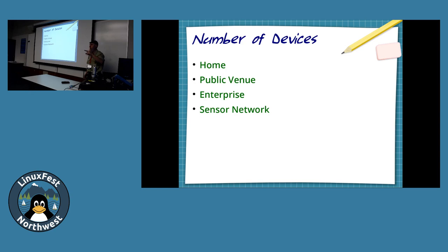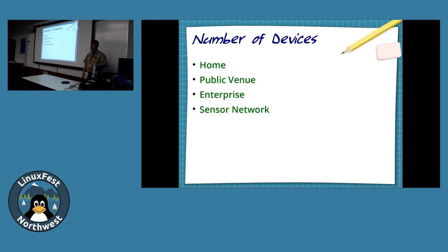Enterprises typically have multiple access points and you roam between them — at least that's the goal. Public venues can be different. You might get roaming, but you're also probably invoking things like a captive portal authentication system, like at an airport or a stadium. Enterprise setups are typically looking for an environment that has HR involved with authentication.